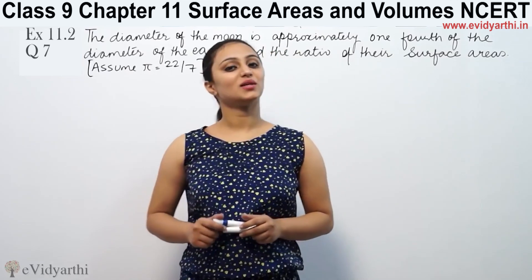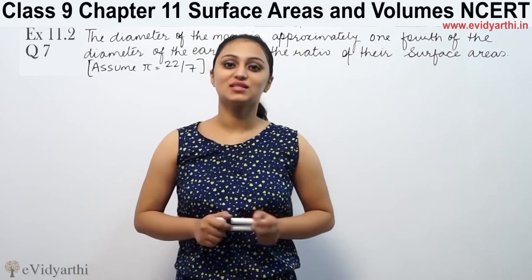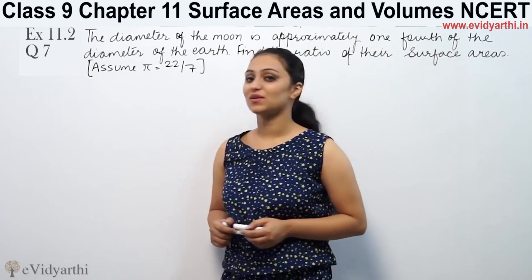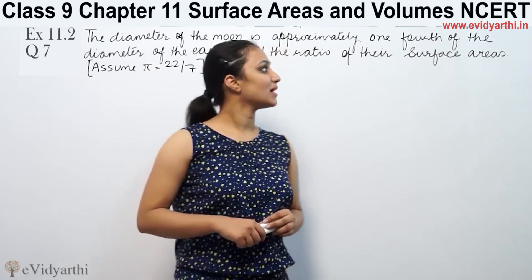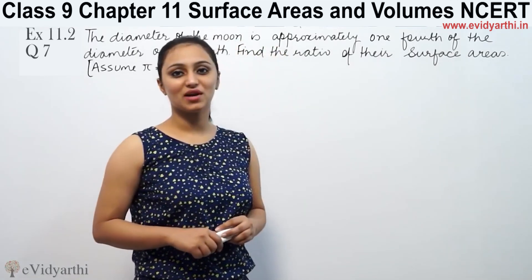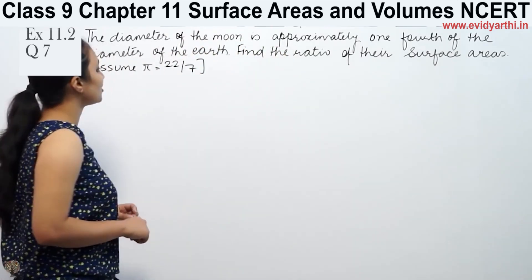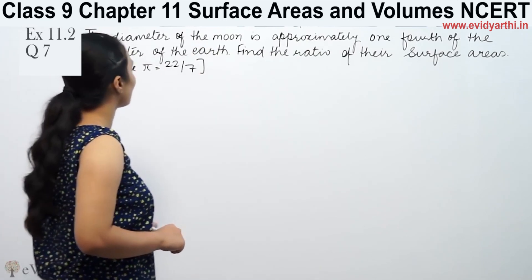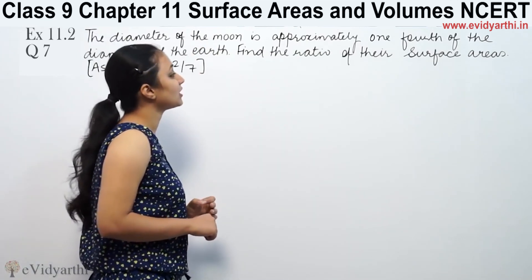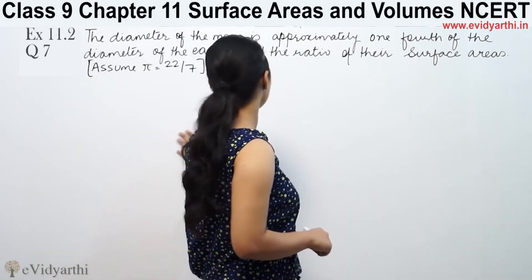Hi, this is Kruj Poo with another question on surface areas and volumes. This is question number 7 from exercise 13.4, page number 225 from NCERT. The question says: if the diameter of the moon is approximately one-fourth of the diameter of the earth, find the ratio of their surface areas.